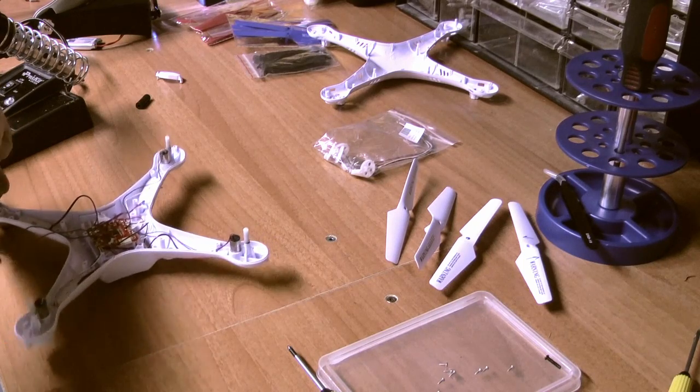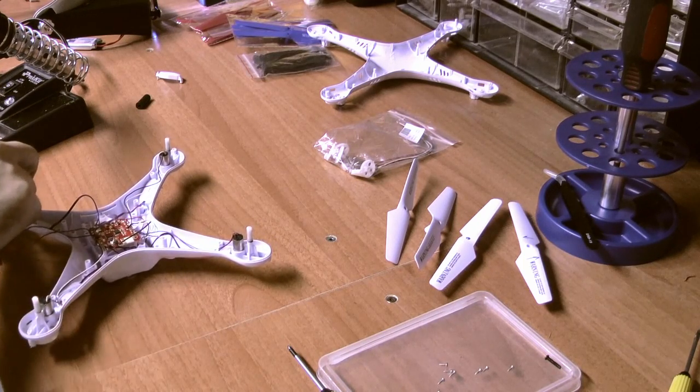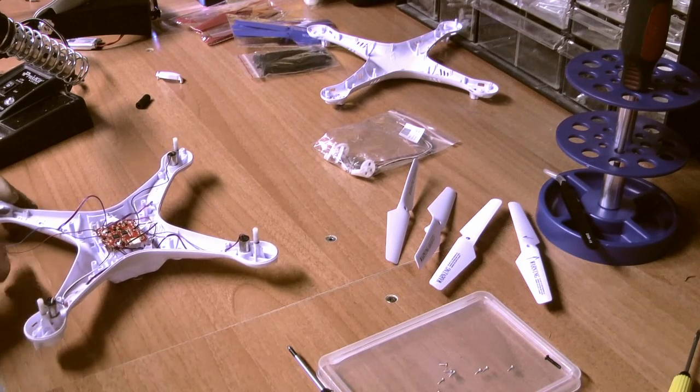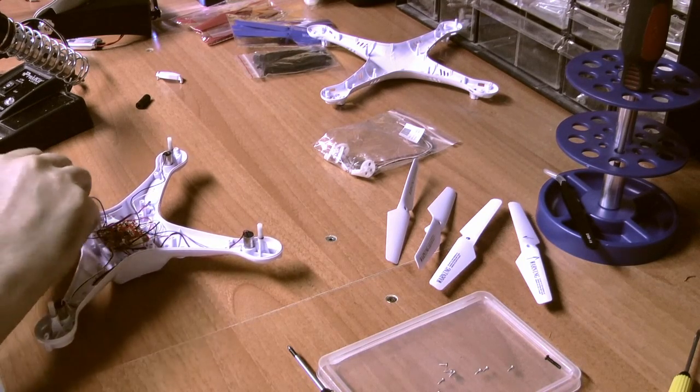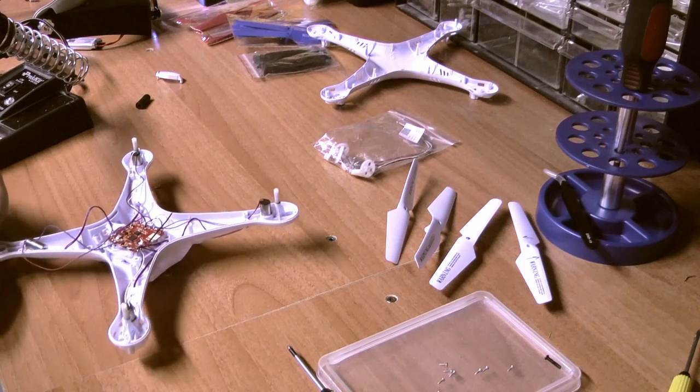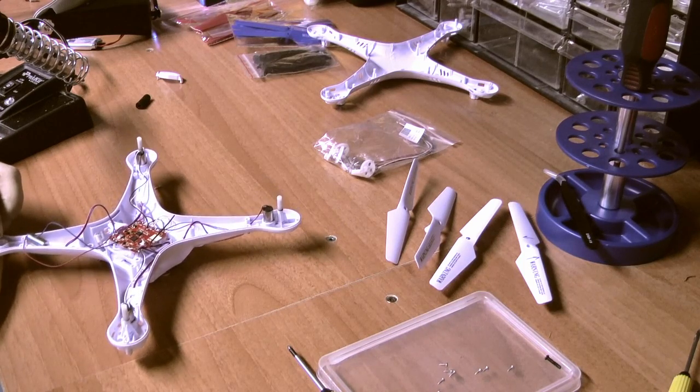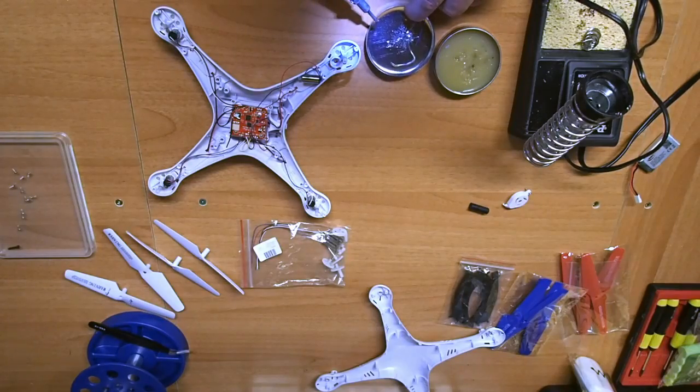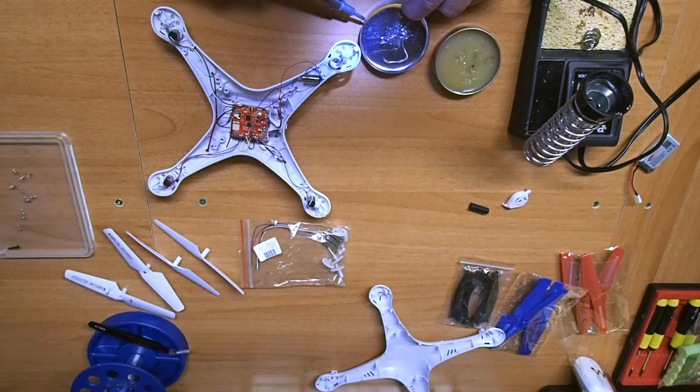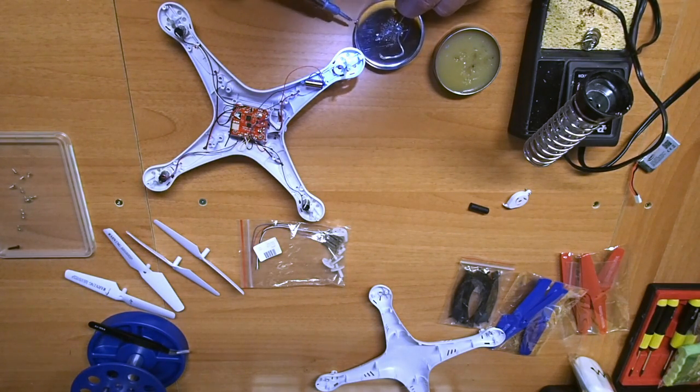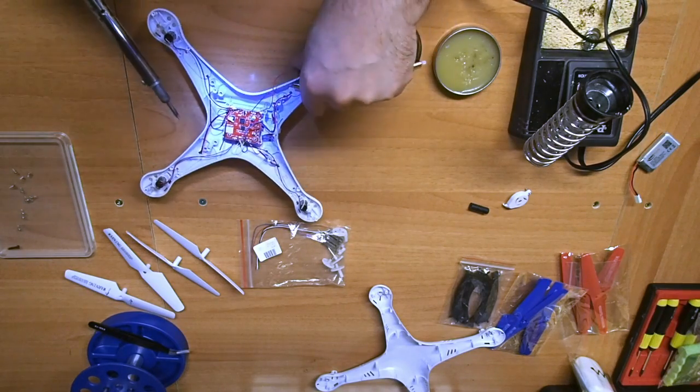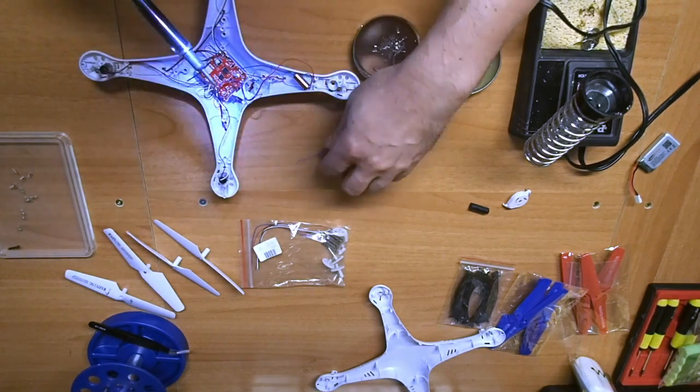When you get motors from the internet, they will have different colored wires. In my case, clockwise motors have red and blue wires, while counterclockwise motors have white and black. I need to replace a clockwise motor.